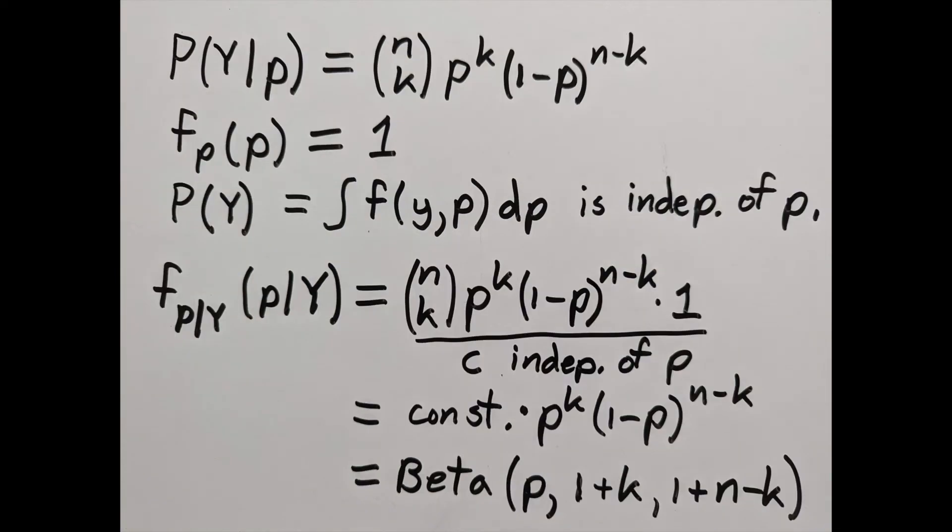Now let's put that all together. The binomial distribution is n choose k, p to the k, 1 minus p to the n minus k. f of p equals 1, describing total ignorance beforehand.